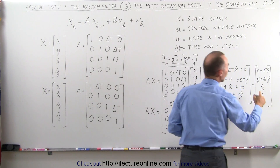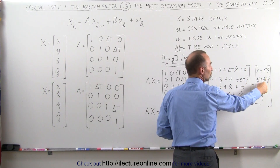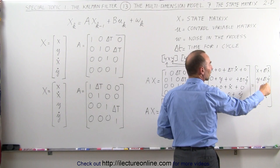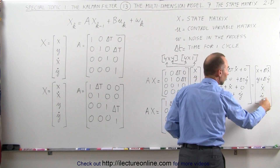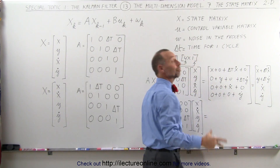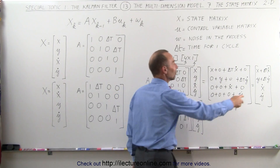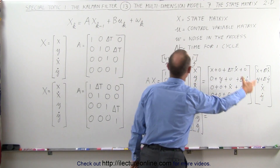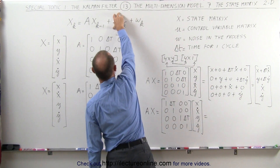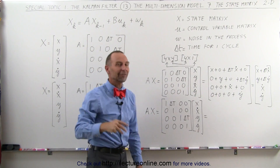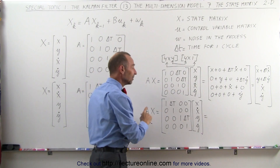In other words, you get the new position in the x direction, the new position in the y direction, the new velocity in the x direction, and the new velocity in the y direction — which is exactly the same as the previous velocity, because the acceleration calculation will come from the next multiplication we'll cover in the next video.